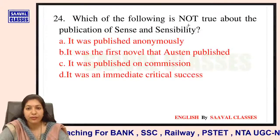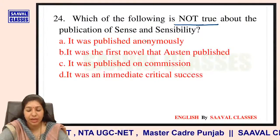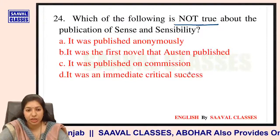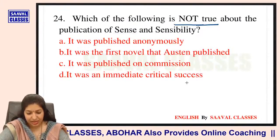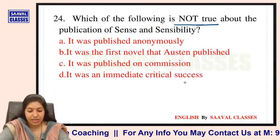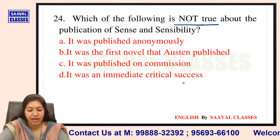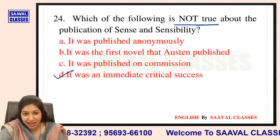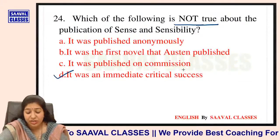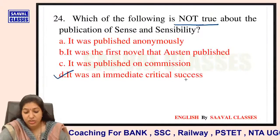Question number 24: Which of the following is not true about the publication of Sense and Sensibility? Options are: it was published anonymously; it was the first novel that Austen published; it was published on commission; it was an immediate critical success. It was NOT an immediate critical success — jab pehli baar publish hua tha toh critics ne ise pasand nahin kiya tha. Commission to mili thi Jane Austen ko publish karvane ke liye.